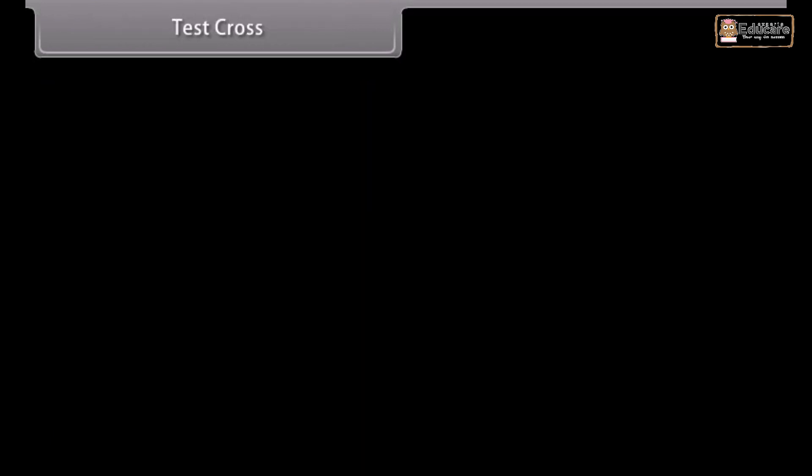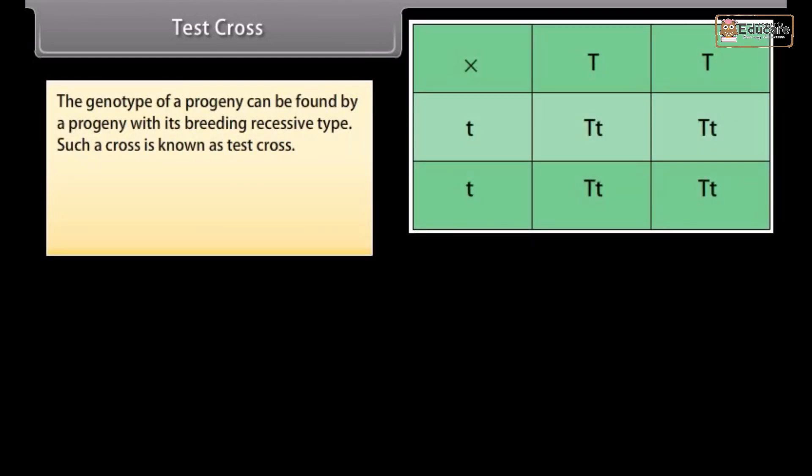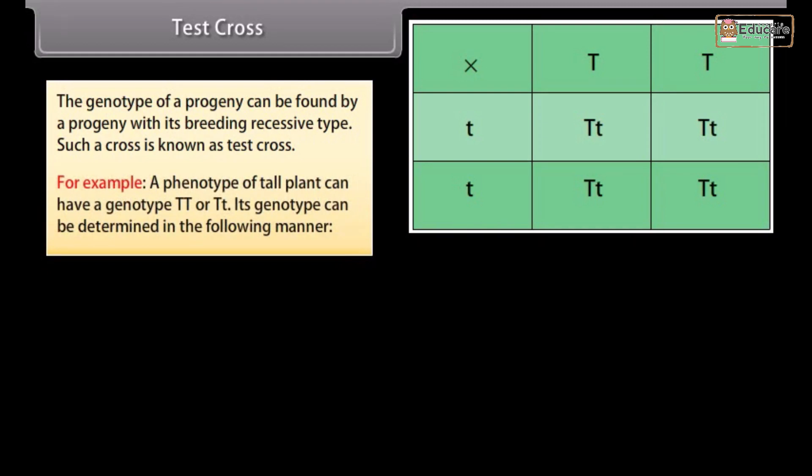Test cross. The genotype of a progeny can be found by crossing a progeny with its breeding recessive type. Such a cross is known as test cross. For example, a phenotype of tall plant can have a genotype TT or Tt. Its genotype can be determined in the following manner.